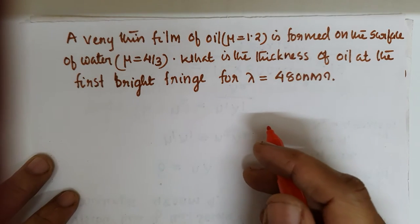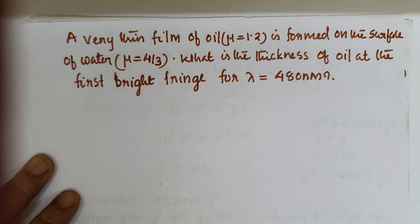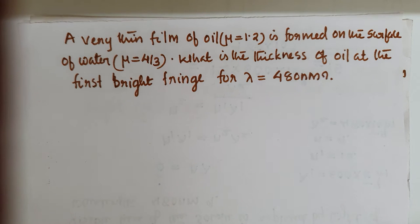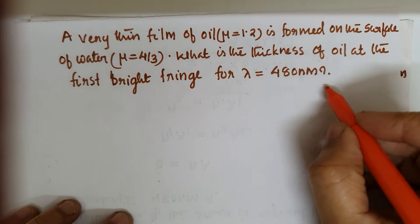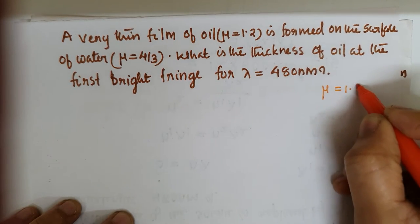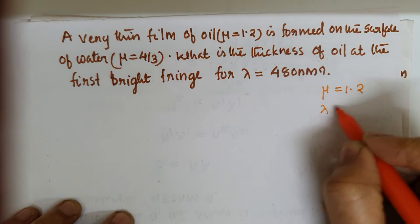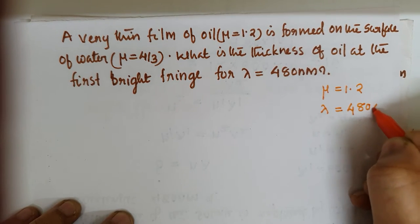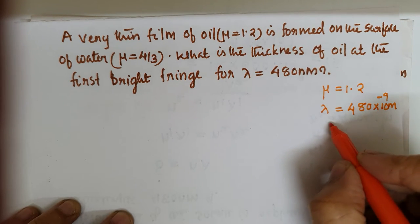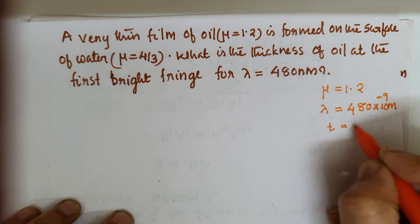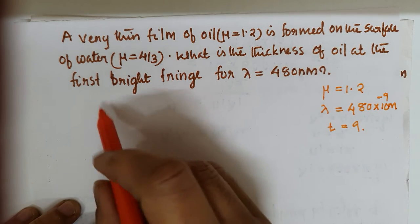A very thin film of oil, mu equal to 1.2, is formed on the surface of water, mu equal to 4/3. What is the thickness of the oil at the first bright fringe for lambda equal to 480 nanometer? The data given is mu equal to 1.2, wavelength lambda equal to 480 nanometer, and thickness t is to be found.